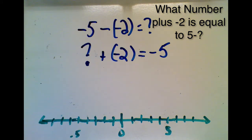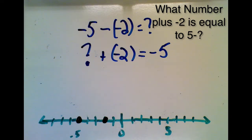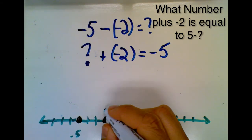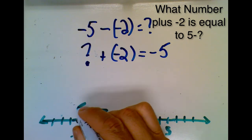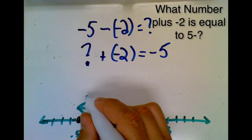And so we put our negative 2 on the number line. We put our negative 5 on the number line. And we draw an arrow from the negative 2 to the negative 5 and get an answer of negative 3.